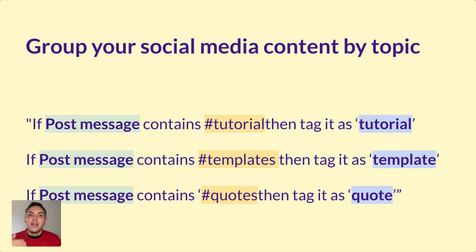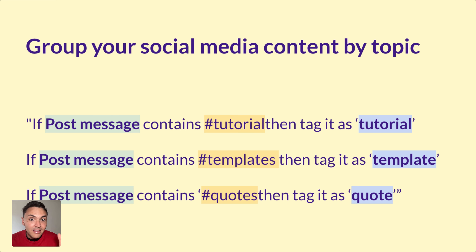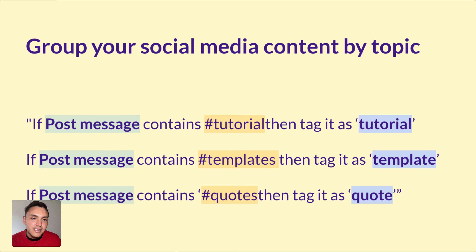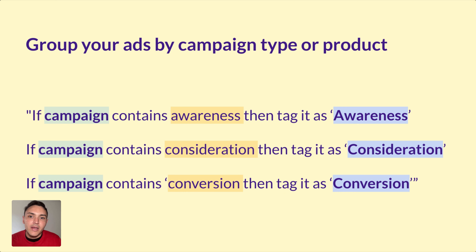And this is actual data. If you run social media, many times you run it based on topics, so you can break down your data by topic. Take the post caption: if it contains the hashtag 'tutorial', tag it as tutorial; if it contains 'templates', tag it as templates; if it contains 'quotes', tag it as quotes. This way I can group my social media content and see what topics are working best.